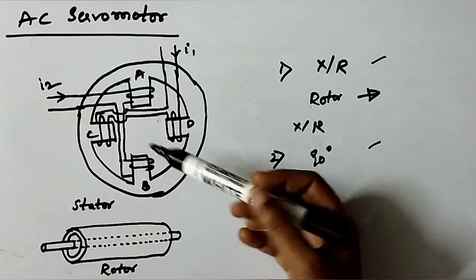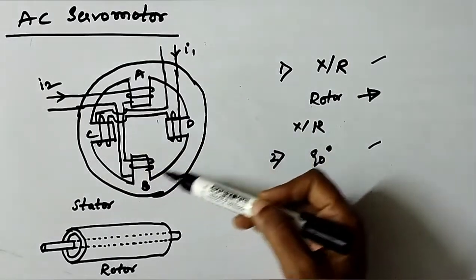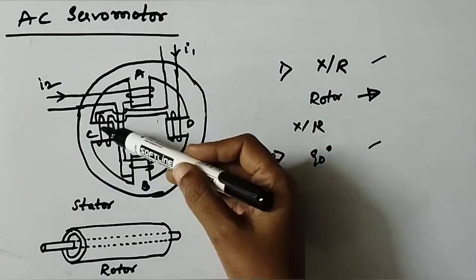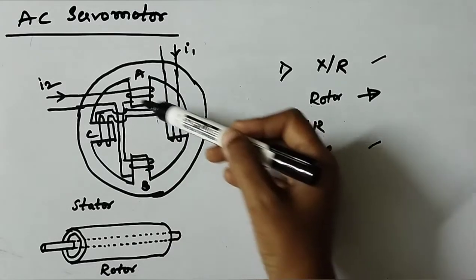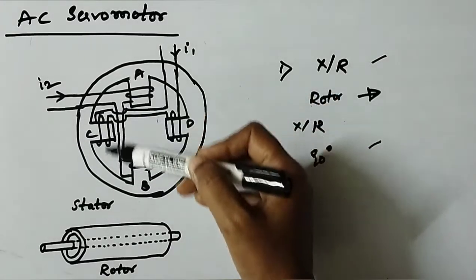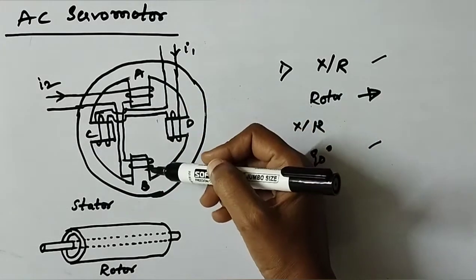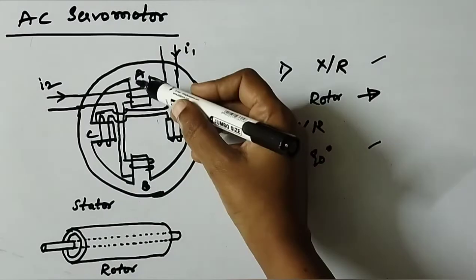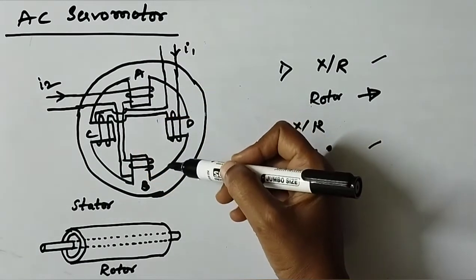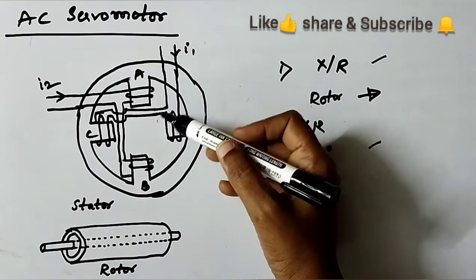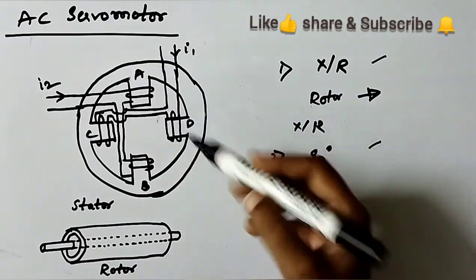Seeing the design features here, we have stator consisting of two pole pairs A, B and C, D mounted on the inner periphery of the stator such that their axes are at an angle of 90 degrees in space. Each pole pair carries a winding, one winding is called reference winding and the other winding is called control winding.